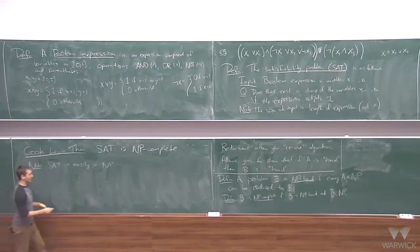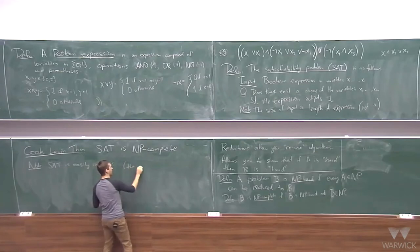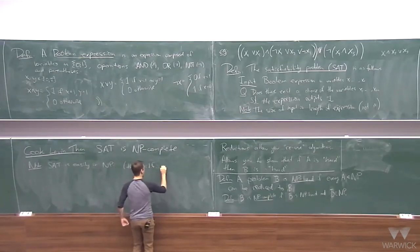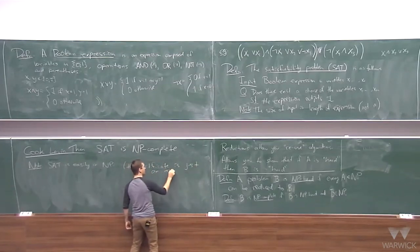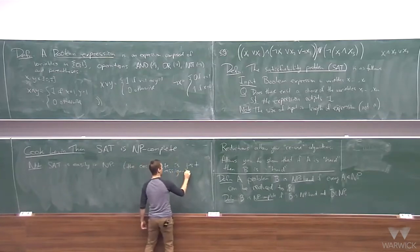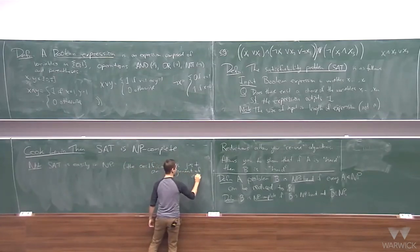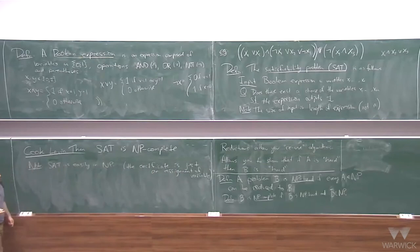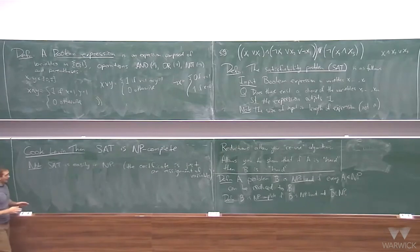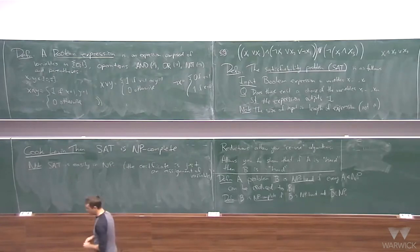There's another way of defining NP in terms of a so-called non-deterministic algorithm. But let's speak of everything in terms of certificates. Now I want to show that something called 3-SAT is NP-complete, and we'll use that to prove other things are NP-complete.